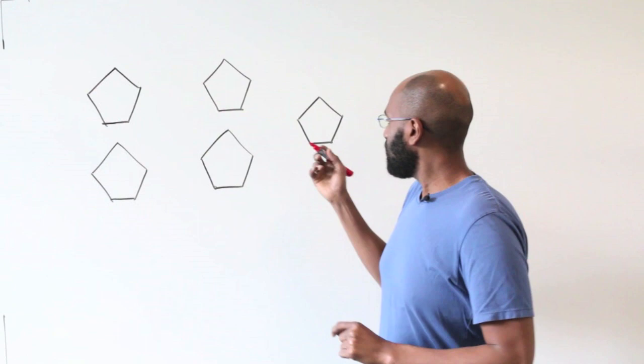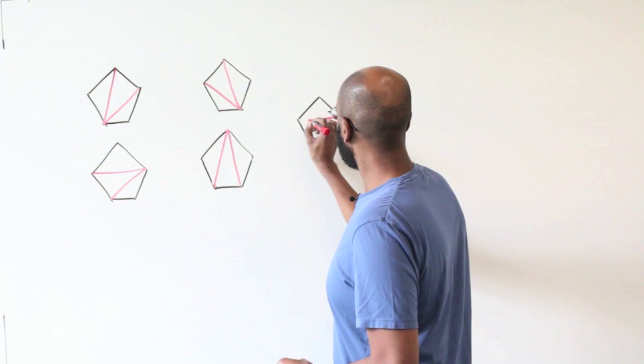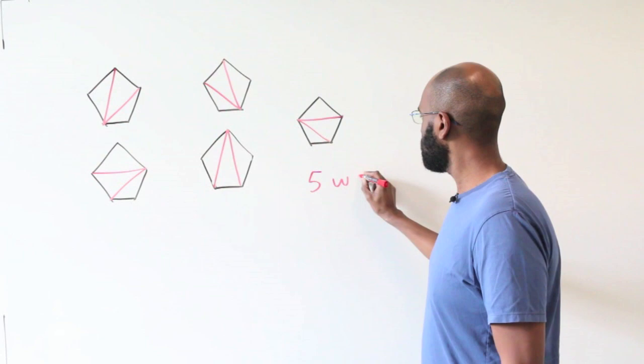Say we use a pentagon. We could do something like this, another choice is something like this, maybe something like this, and then something like this, and something like this. So it seems like with a pentagon, there are five ways to do this, but what about in general?